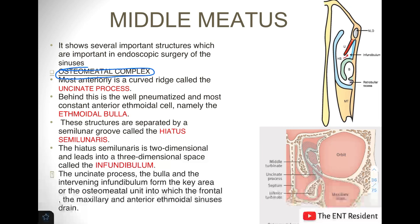The most anterior structure found in the middle meatus is the uncinate process. Behind it we find a very well pneumatized and the most constant anterior ethmoidal cell, which is called the bulla ethmoidalis — labeled B in the diagram. It is the most constant anterior ethmoidal cell.